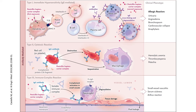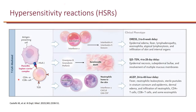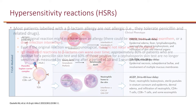Antibody-mediated hypersensitivity reactions include types 1, 2, and 3 — all antibody-mediated but involving different antibodies. For example, type 1 is IgE. When we think of T-cell-mediated hypersensitivity reaction, this is specifically type 4.